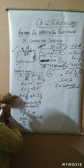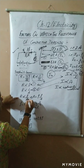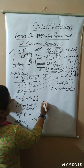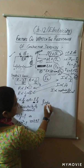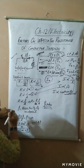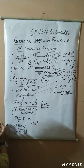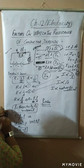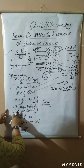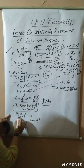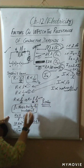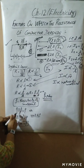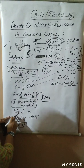Combining these two proportionalities, R is proportional to L/A. To remove the proportionality sign and make it an equation, we introduce a constant — the symbol rho (ρ) — known as resistivity of the material. So R = ρL/A. Cross-multiplying: ρ = RA/L. If we put R = 1 ohm, A = 1 m², and L = 1 m, we get ρ with unit of ohm·meter.